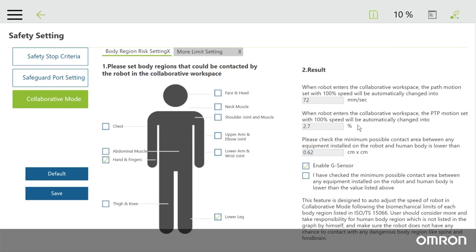The right side of this screen displays the Cobot's running speed in Collaborative Mode. The setting values can be saved. Check the minimum possible contact area and make sure that the area where the Cobot's end effector may be in contact with a person is larger than the area described. This should apply to any other equipment attached to the Cobot.